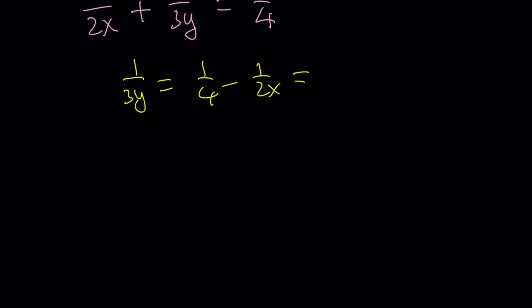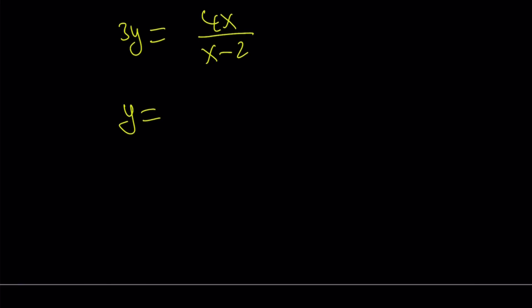And if you flip both sides, 3y is going to become 4x over x minus 2. And if you divide both sides by 3, you're going to get y equals 4x divided by 3x minus 6.